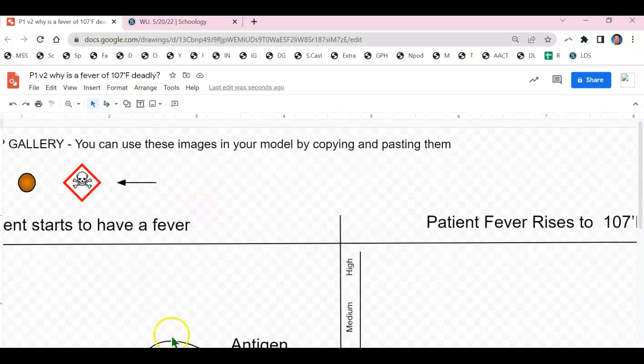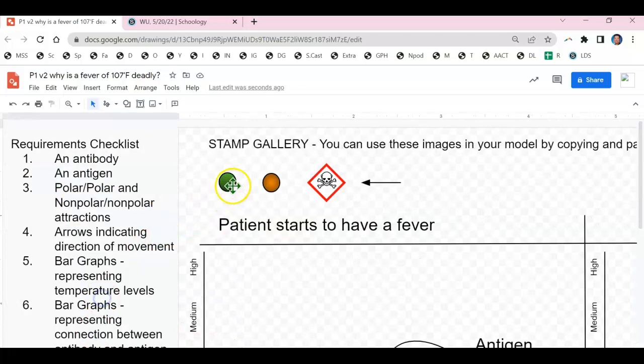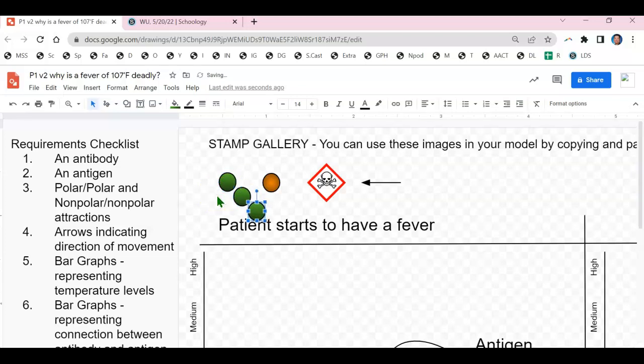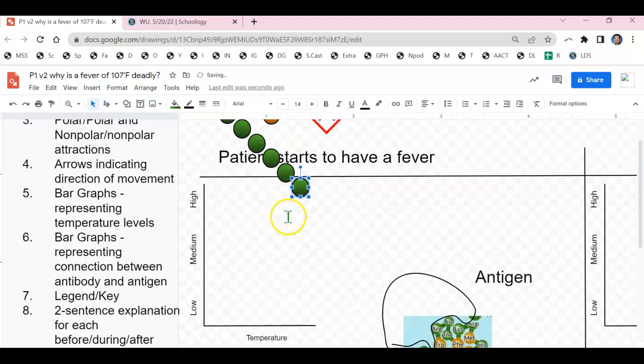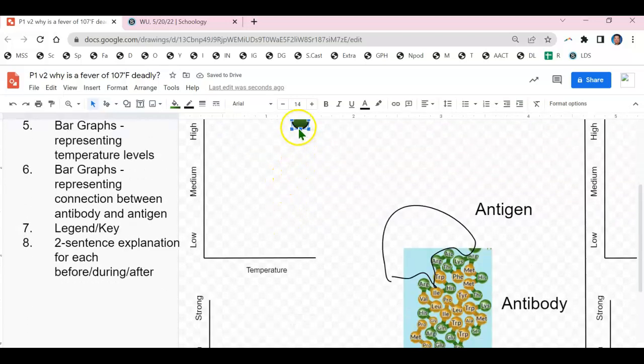So I'm going to make five copies of the polar particle. Copy, paste, Ctrl-C, Ctrl-V. That's five. And then I'm going to bring them down to the puzzle piece formation where the polar and the polar attract.